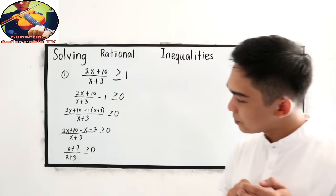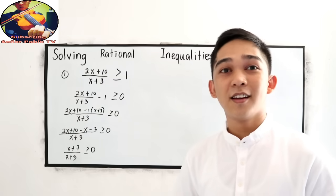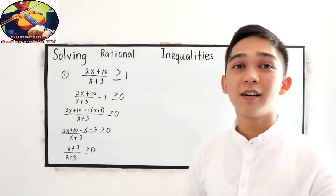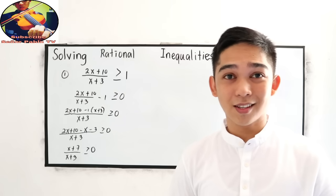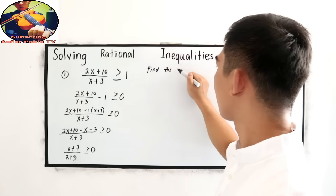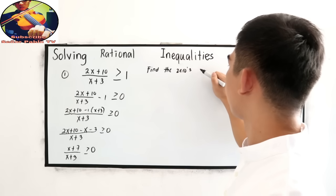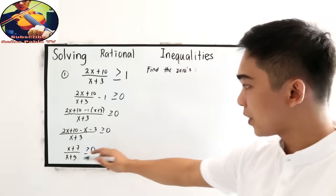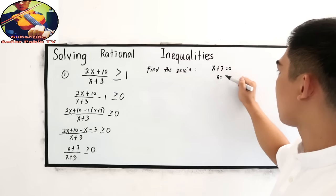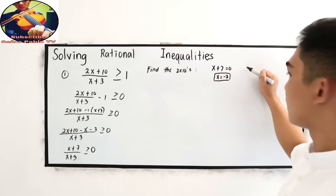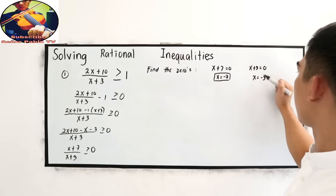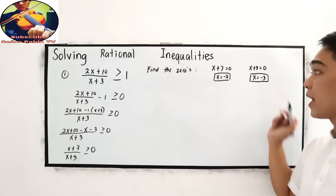Second step: find the zeros of our rational inequality. Our zeros come from setting each factor to 0. From the numerator: x + 7 = 0, so x = −7. From the denominator: x + 3 = 0, so x = −3. These are our two zeros: −7 and −3.